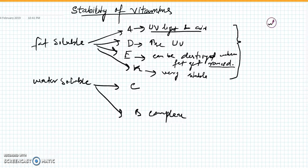A general rule for fat soluble vitamins is they are stable to heat. So if we have to go for thermal processing, we don't have to bother about the destruction of vitamins which are fat soluble.